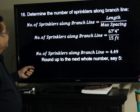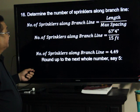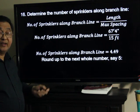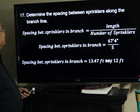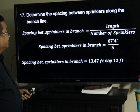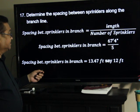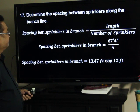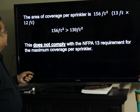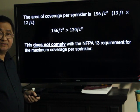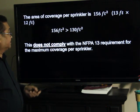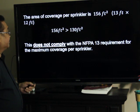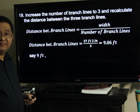Determine the number of sprinklers along the branch line: the length divided by maximum spacing — 67 feet and 4 inches divided by 15 — we have 4.49, and we round up to 5. Determine the spacing between the sprinklers along the branch line: 67 feet 4 inches divided by 5, the result will be 13.47 feet — just to be safe, say 12 feet. The area coverage per sprinkler is 13 feet by 12 feet, which results in 156 square feet. Since it is greater than 130 square feet, it doesn't comply with the NFPA 13 requirement. Therefore, we will increase the number of branch lines to 3.